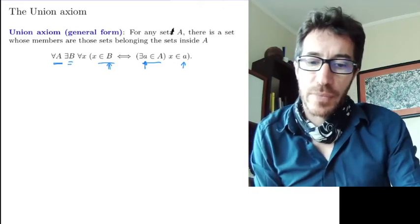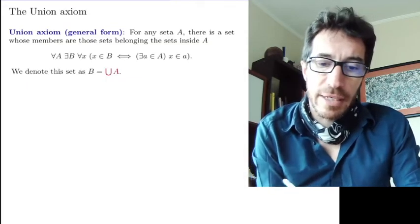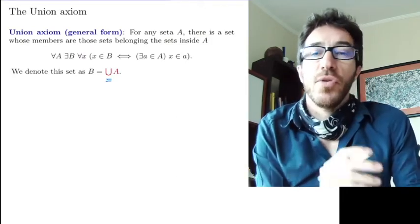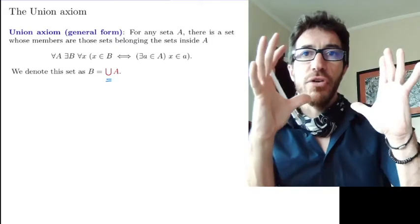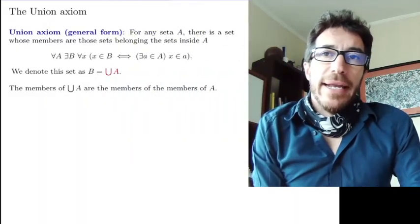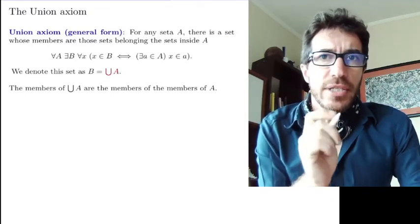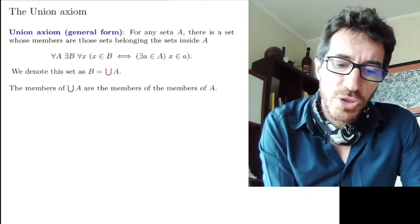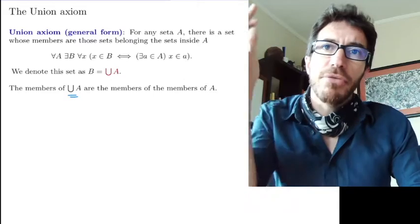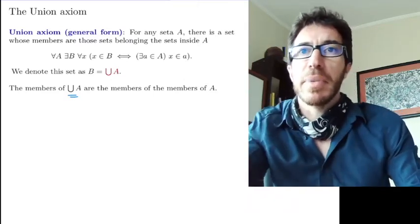We're going to denote this by union A, one big capital U for union for a set of sets. We can say what we just said in different words. Essentially, the members of union A are exactly the members of the members of A. You take the members of A and then you take the members of those.